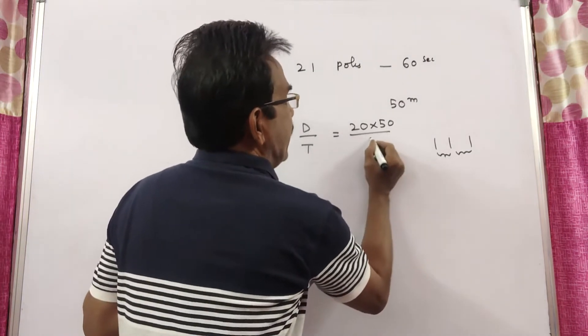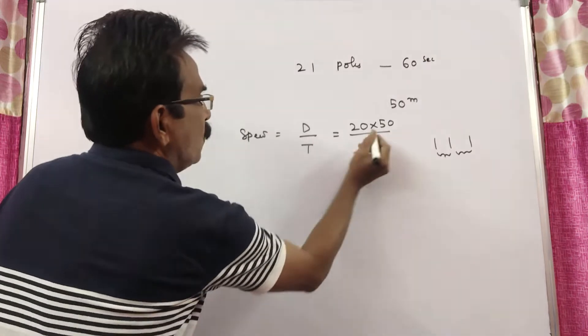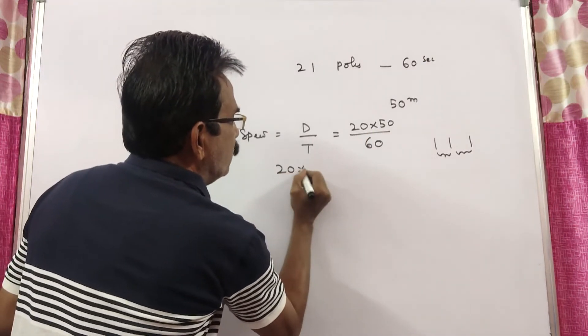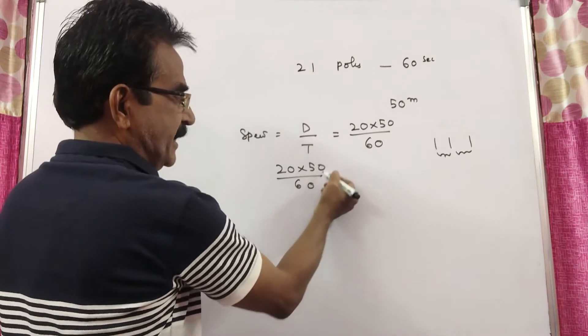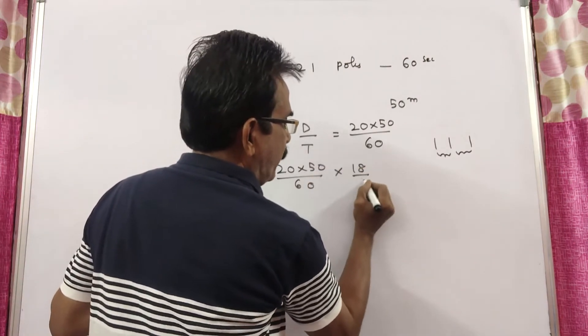This is distance by time 60 seconds. So 20 into 50 by 60, this is meters per second. By doing 18 by 5, we get the velocity in Kmph.